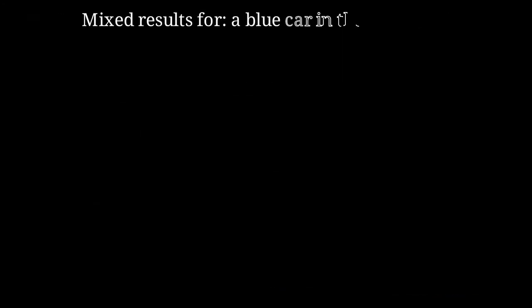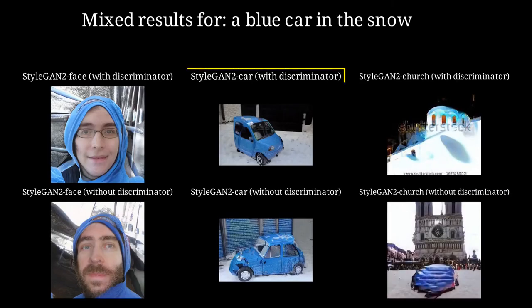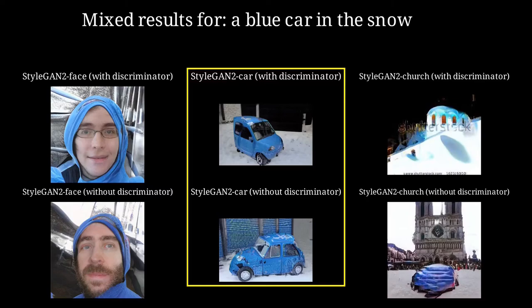When using as target text 'a blue car in the snow', only StyleGAN2 Car is able to generate the requested image. Interestingly, StyleGAN2 Church without discriminator is also able to generate a blue car in front of a church.